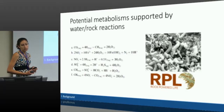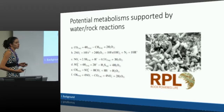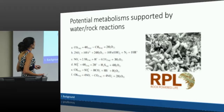There are several metabolisms that could be supported by these water-rock reactions. One that is oftentimes invoked is methanogenesis, because if you have all this hydrogen around and some carbon is available, you can make methane gas. Methane is a prevalent gas found in these serpentinizing environments. Its source is oftentimes debated — it may be biotic, abiotic, or a mixture of the two — but it's definitely a relevant gas along with hydrogen.